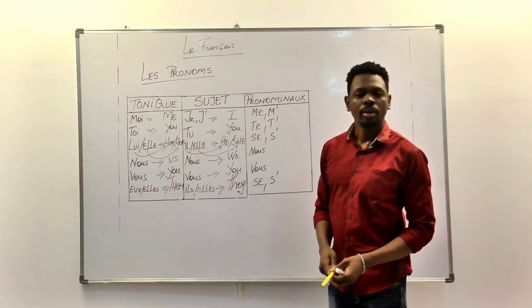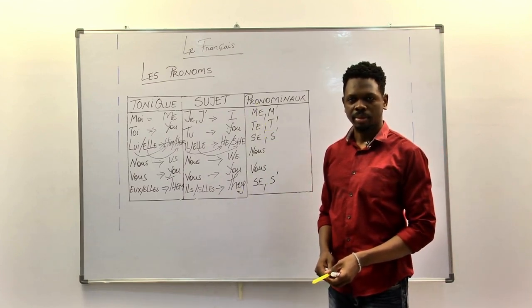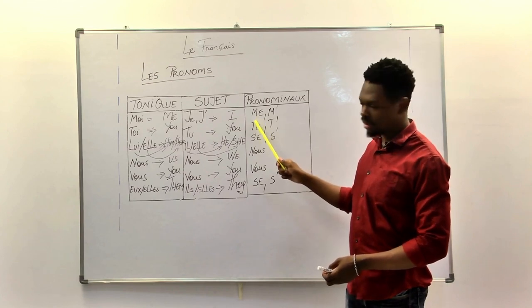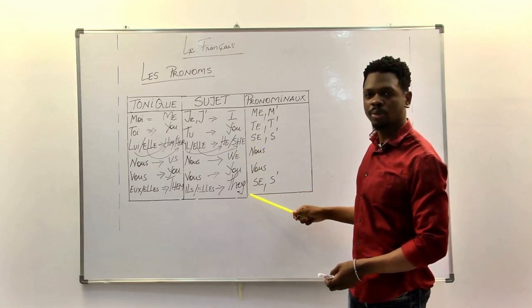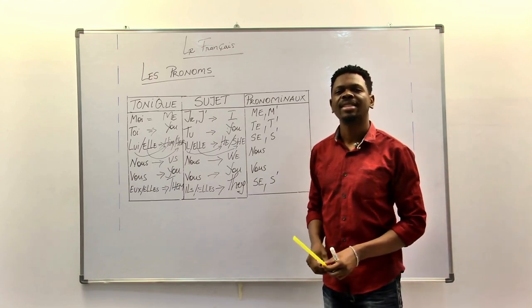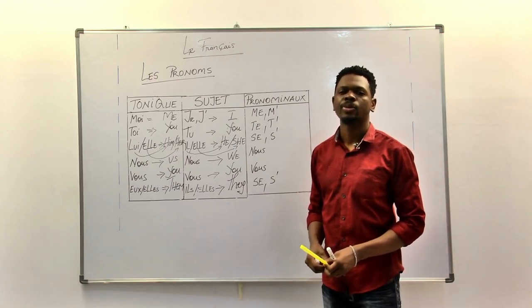So, pronomino reflexive: we have me, te, se, nous, vous, se. It's used for reflexive verbs and reflexive verbs only.